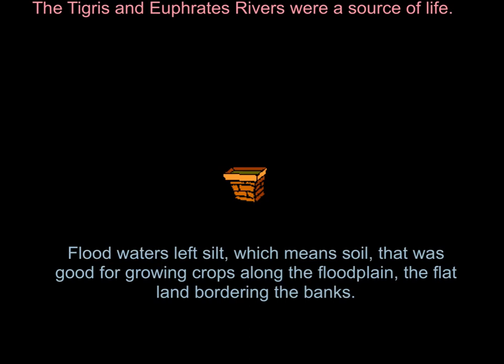The Tigris and Euphrates rivers were a source of life. If you didn't have the rivers, you would not have the soil you would need to grow crops. There is a flood season where the rivers flood because of extended rain or possibly melted snow in the mountains. The floodwaters pick up soil — this is called silt — and when the flood waters go over the banks of the river, after the flood season they go back into their banks and leave behind this silt along the floodplain. The floodplain is the flatland that borders the rivers, and that makes the soil especially good for growing crops.